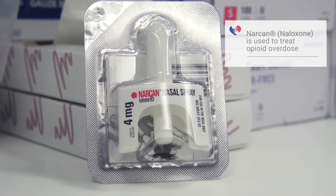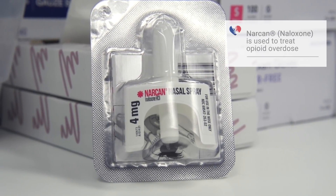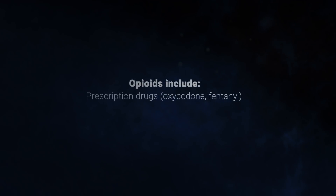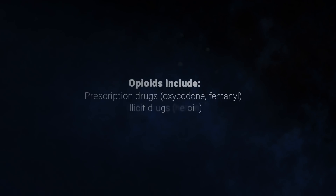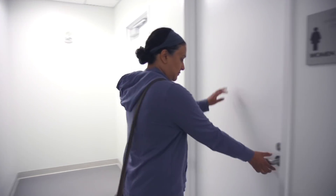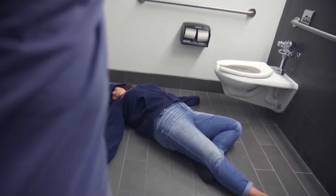Narcan, also called naloxone, is a medication used to treat an opioid overdose. Opioids are prescription medications like oxycodone or fentanyl and illicit drugs like heroin. Opioids can severely reduce or completely stop a person's breathing. This is what we refer to as an overdose.